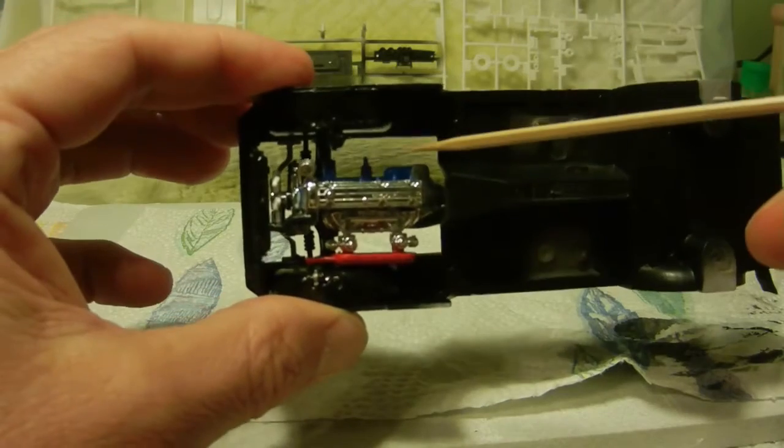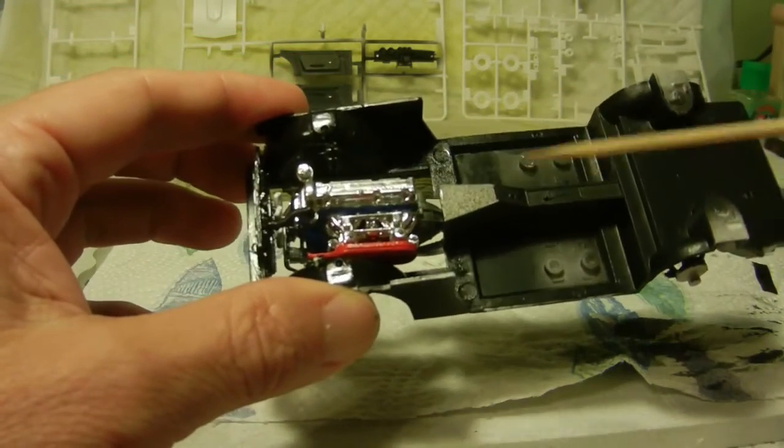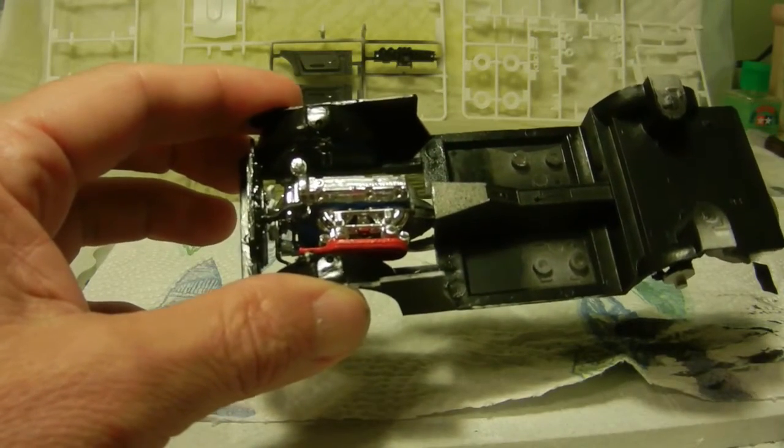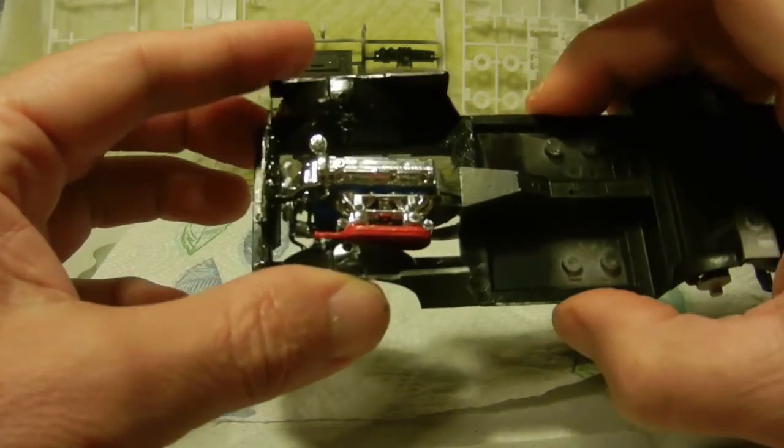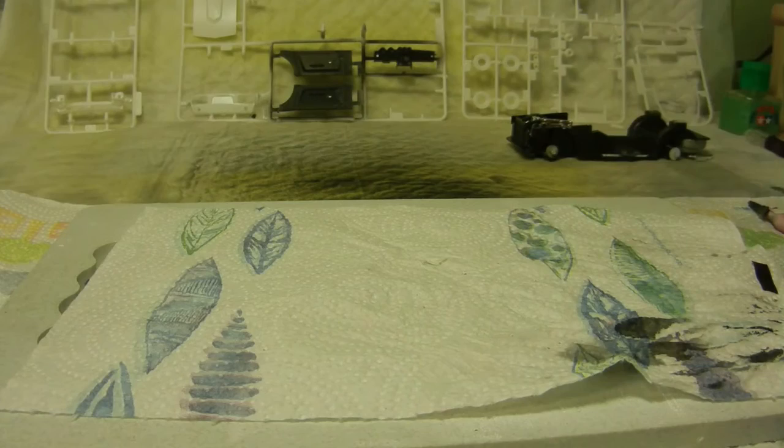Once again the actual engine block itself is the Craftsmart blue gloss, and once again the whole engine, fan, everything is now all sealed and ready to go with the Future pledge.